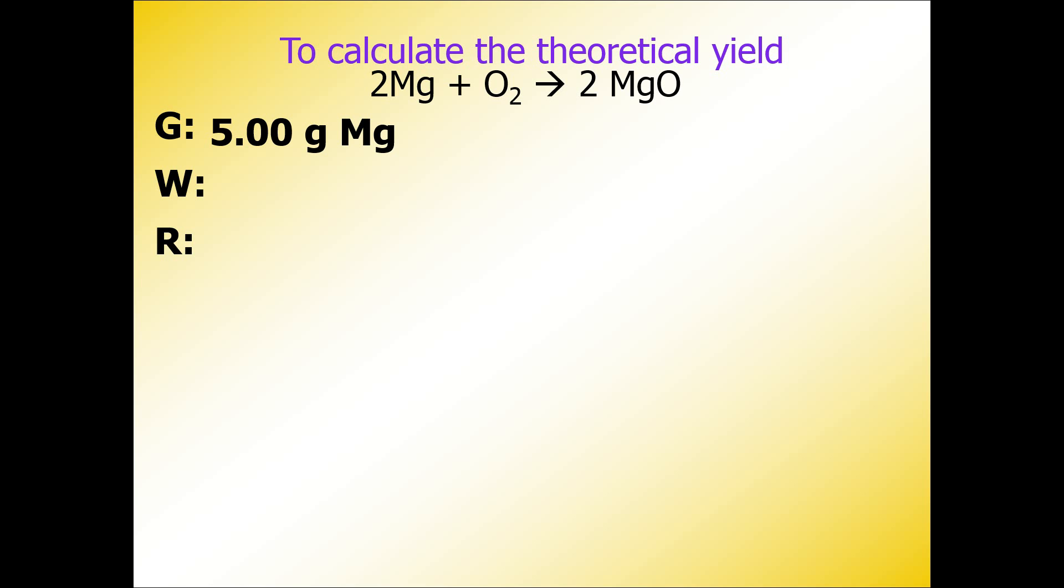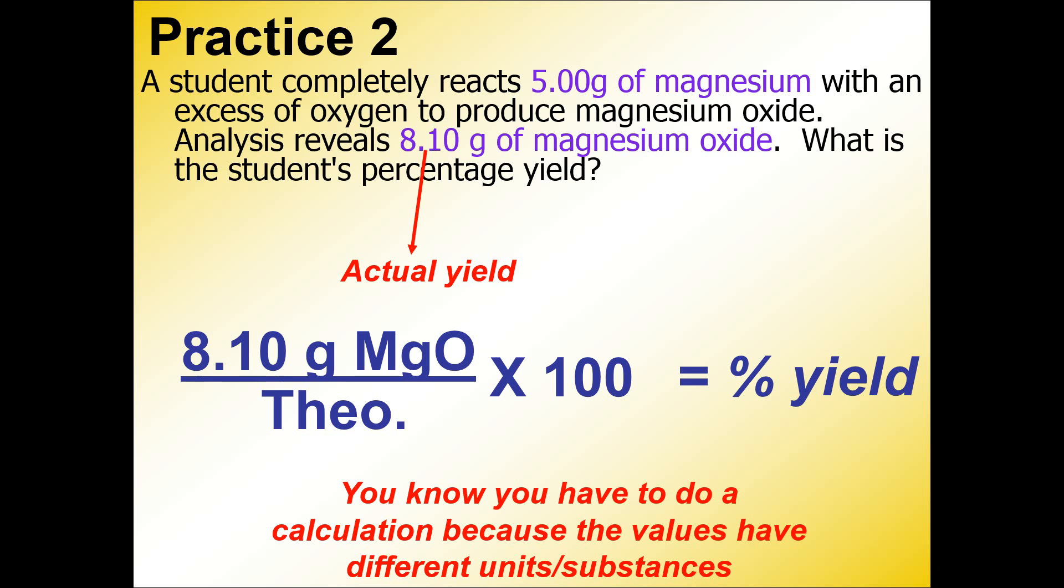This was the given, which comes from the question in the previous slide. The want is grams of magnesium oxide. Let me go back so we can look at that problem. Here is the given: 5.00 grams of magnesium. I know it's a given because this is a reactant. Percent yield means product—we're always doing calculations for the product.